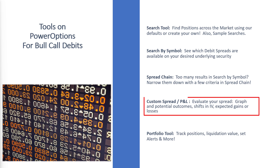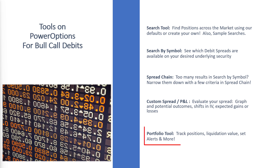The Custom Spread Profit and Loss Chart lets you build your spread manually, evaluate the position, the profit and loss chart, outcomes, and adjust for shifts in implied volatility. And of course, the Portfolio tool lets you track your positions, evaluate current liquidation versus future expiration, set alerts, evaluate rollouts, and more.